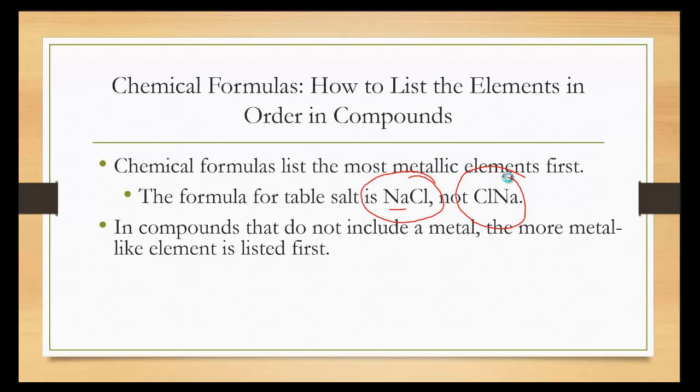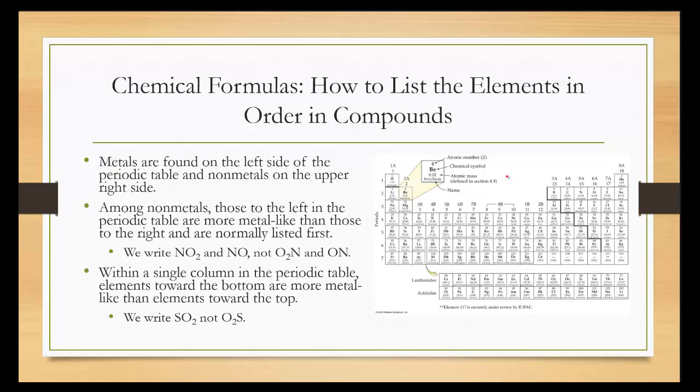Metals are found on the left side of the periodic table, and non-metals are found on the upper right. Among non-metals, those on the left of the periodic table are more metal-like than those on the right. So as you get closer to the metals, so you go left and down, it becomes more metal-like.